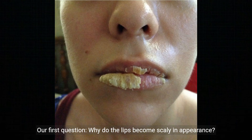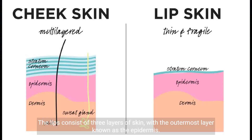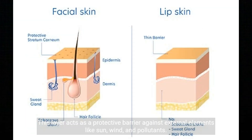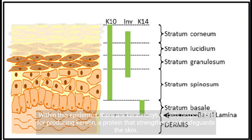Our first question: why do the lips become scaly in appearance? The lips consist of three layers of skin, with the outermost layer known as the epidermis. This layer acts as a protective barrier against external elements like sun, wind, and pollutants. Within this epidermis, there are keratinocytes — cells responsible for producing keratin, a protein that strengthens and safeguards the skin.